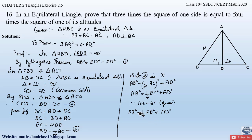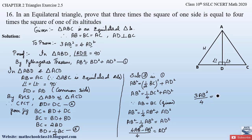Sending (1/4)AB² to the left-hand side: AB² − (1/4)AB² = AD². Taking LCM of 4: (4AB² − AB²)/4 = AD², which gives 3AB²/4 = AD². Sending 4 to the right-hand side gives 3AB² = 4AD², which is exactly what we had to prove.